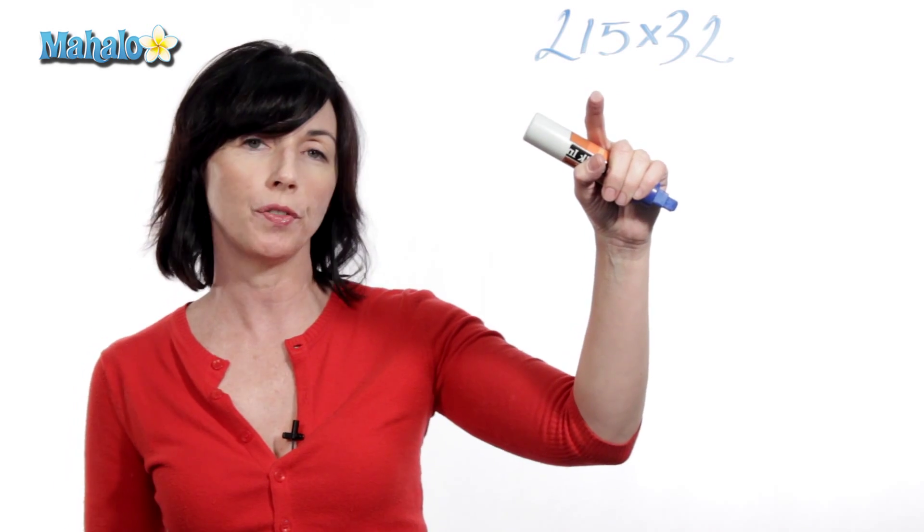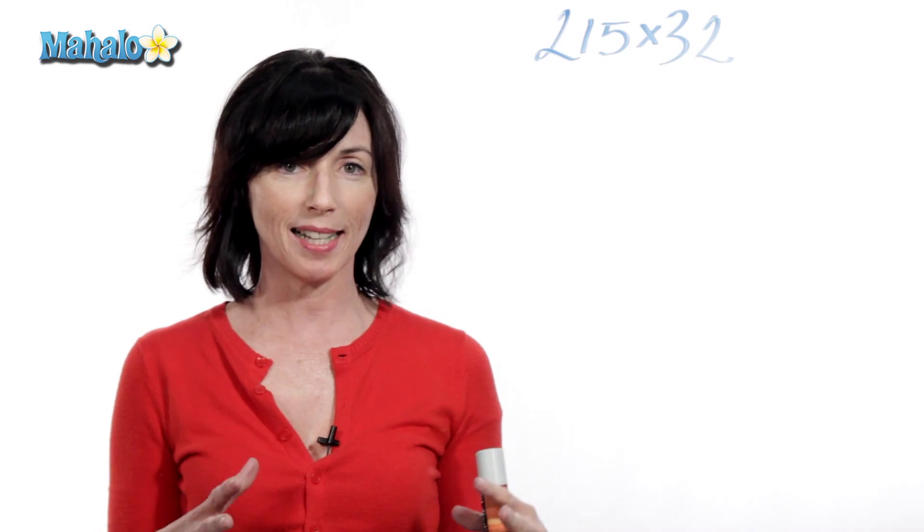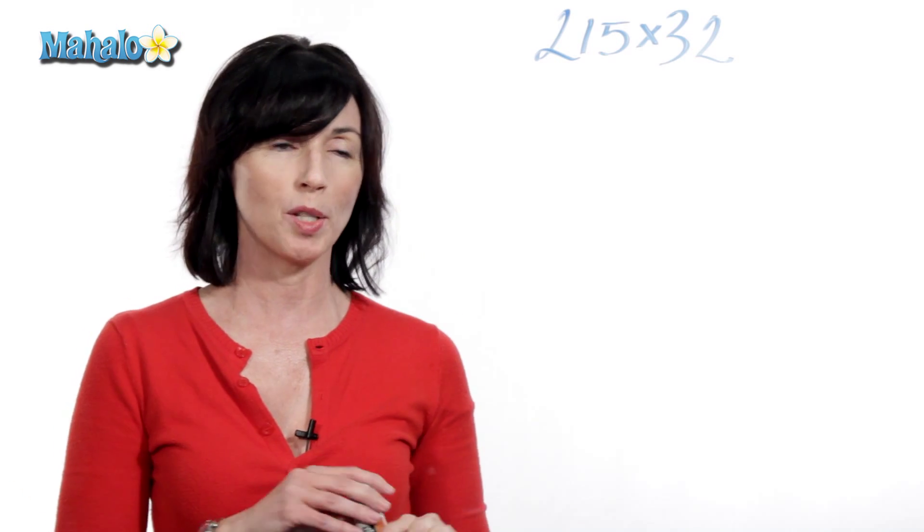So let's say we're multiplying 215 times 32. This is how the lattice method works. You have to get it set up right and then you just go. It's pretty easy.